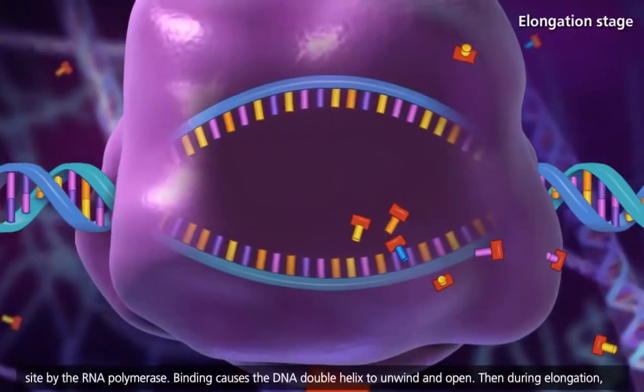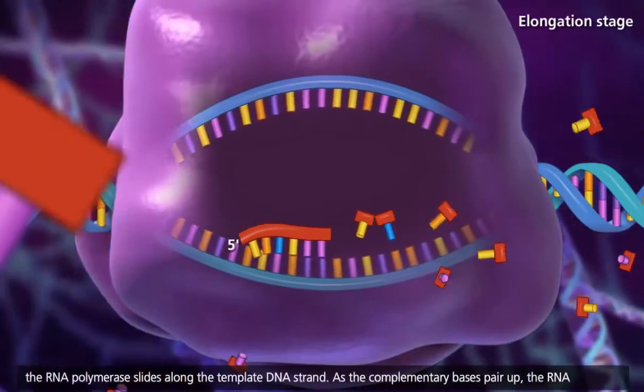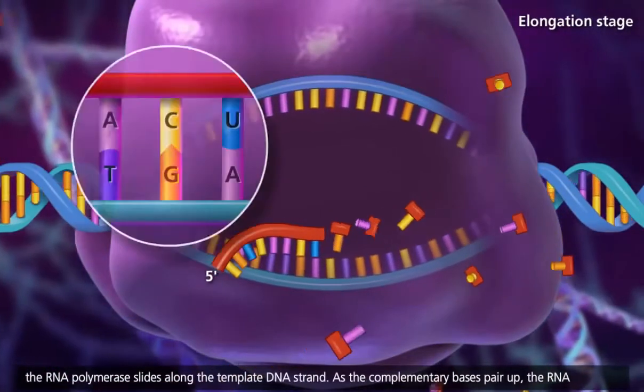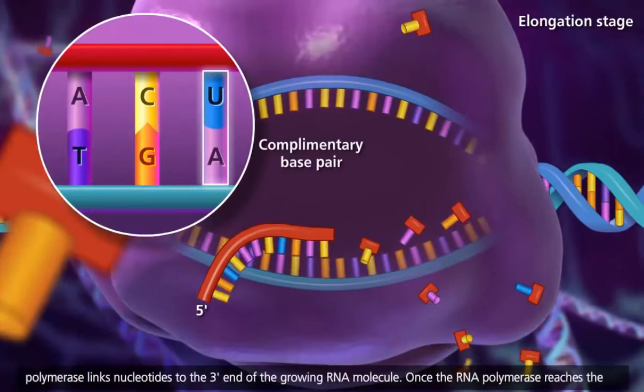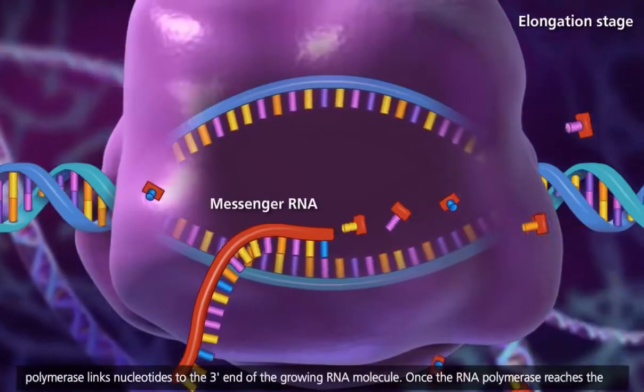Then during elongation, the RNA polymerase slides along the template DNA strand. As the complementary bases pair up, the RNA polymerase links nucleotides to the three-prime end of the growing RNA molecule.